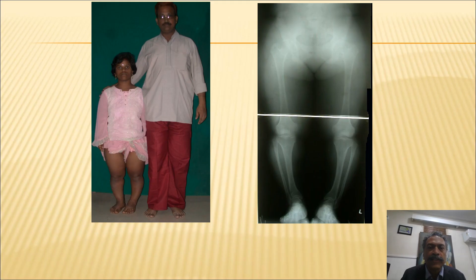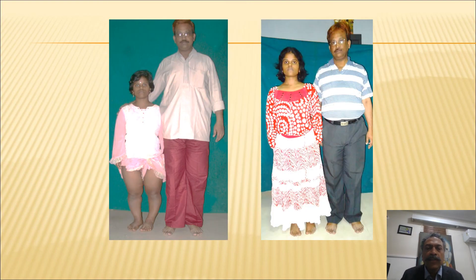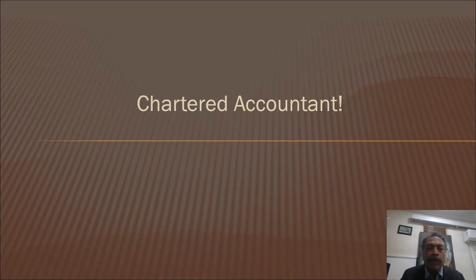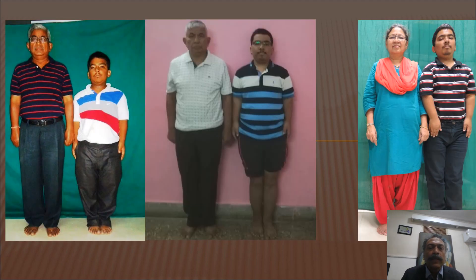A young lady who started at age 15 years underwent cross lengthening for the femur and tibia, achieving an excellent 27 centimeters of combined length. She is shown here with her father before and after surgery — you can see her life has been transformed. She became a chartered accountant. Similarly, a young lad who is also an engineer demonstrates how height is transformed and lives are transformed, allowing them to function well in society as short normals.